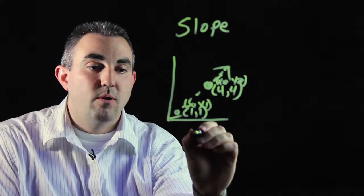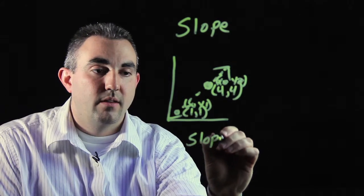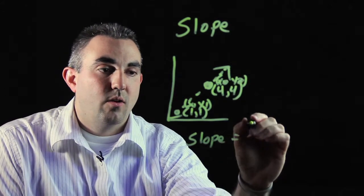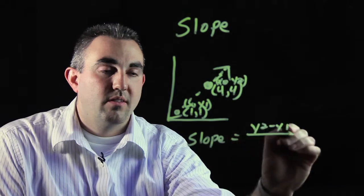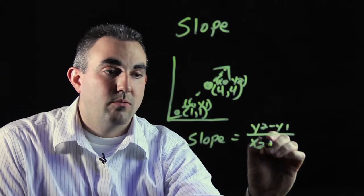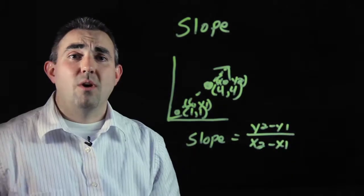Now, our slope formula is y2 minus y1 divided by x2 minus x1.